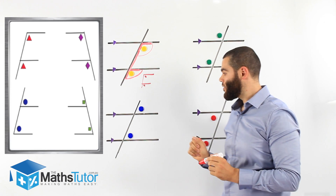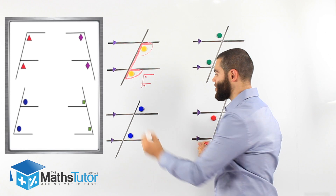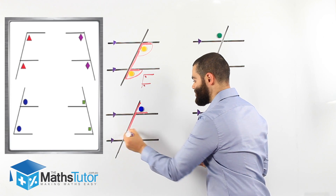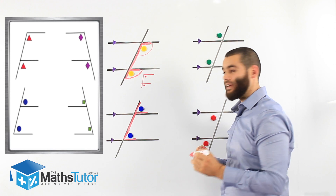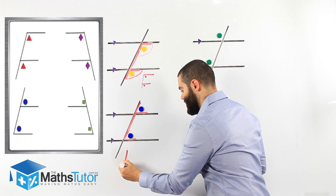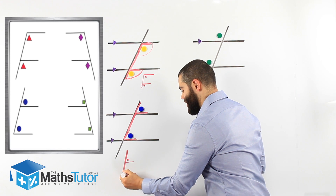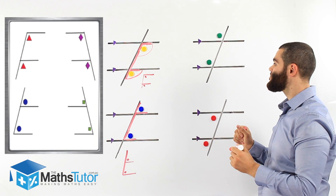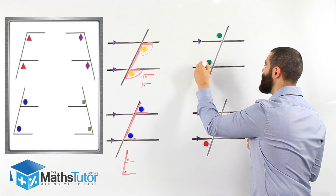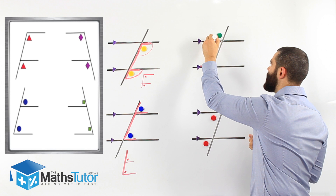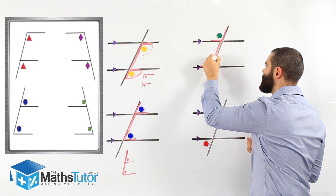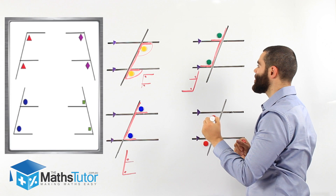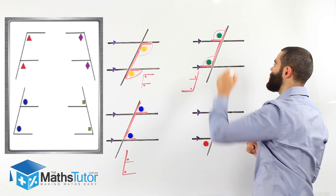Looking at this next pair, these are also corresponding. How do we know? We highlight, and we highlight, and then we join them together. We can see that it makes an F upside-down — our angle is there and there. Looking at this one here, another pair of corresponding angles. We highlight them, and when we join them, we can see an F-looking shape, upside-down and back to front. This angle is corresponding to that angle there.